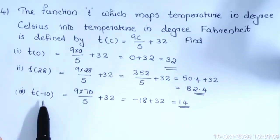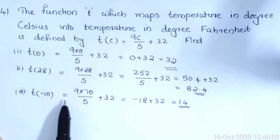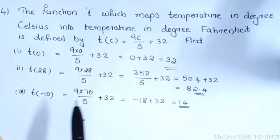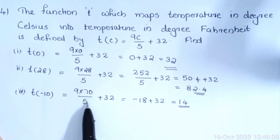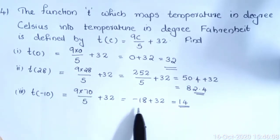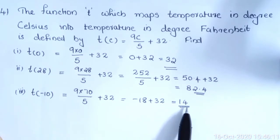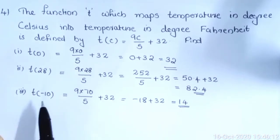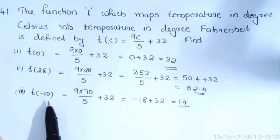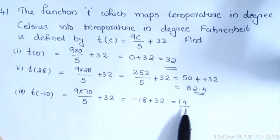Third: find T(−10). T(−10) = 9×(−10)/5 + 32 = −18 + 32 = 14. So T(−10) = 14.